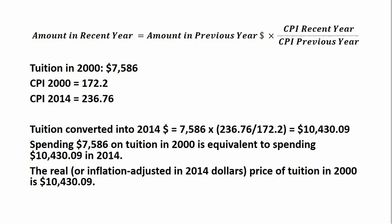Plugging our information into the formula, $7,586 multiplied by 236.76 divided by 172.2 — tuition converted into 2014 dollars — we see that we get a value of $10,430.09. So spending $7,586 on tuition in 2000 is really like spending $10,430.09 on tuition in 2014. We can say the real, or inflation-adjusted, tuition is $10,430.09 in 2000 dollars.